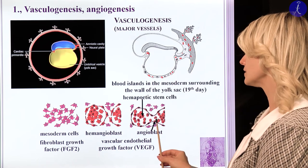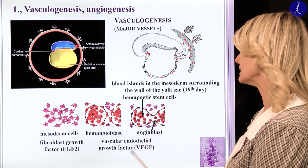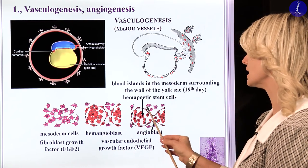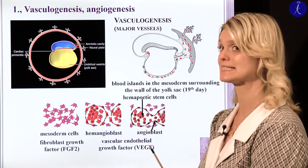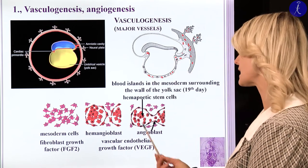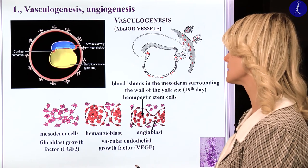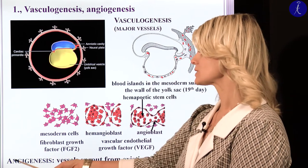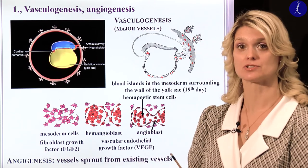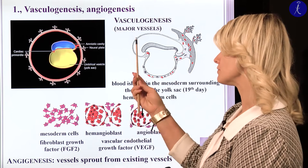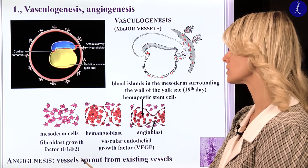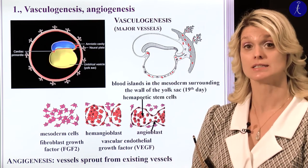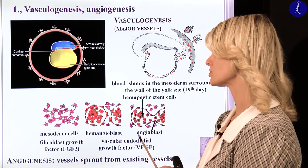The outer angioblasts will form the endothelial cells of the vessels, and the inner hemopoietic stem cells will develop into the blood cells. Angiogenesis — what is its definition? After vasculogenesis, vessels will sprout from these existing vessels. This is the angiogenesis.